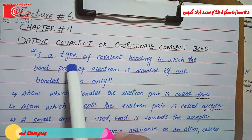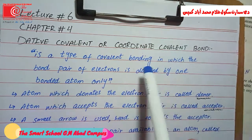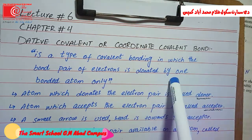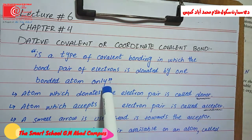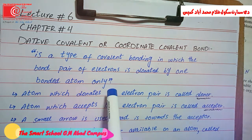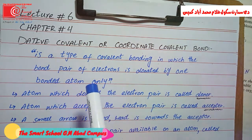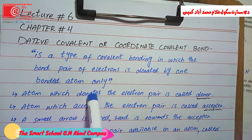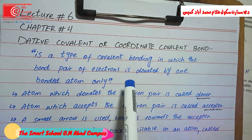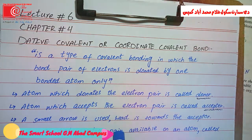A coordinate covalent bond is a type of covalent bond in which the bond pair of electrons is donated by one bonding atom only. In a regular covalent bond, each of the two atoms contributes one electron to form the shared pair, but in a coordinate covalent bond, the electron pair is shared from only one of the atoms.